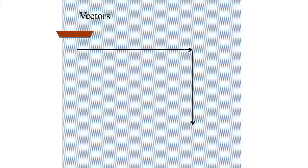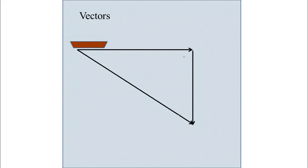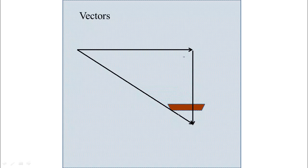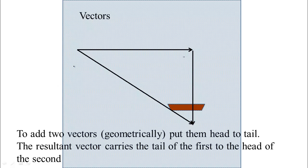We take the arrow representing our motion due to rowing and put on its head the tail of the vector that represents the current. Then we see the arrow representing our true velocity — we're moving through the water, but the water is also moving, so an observer looking down would see the boat moving along that resulting line. So geometrically, vectors are like arrows with a particular direction and magnitude but no fixed starting point. To add two vectors, put one vector's tail on the head of the other, then draw the vector from the tail of the first to the head of the second.